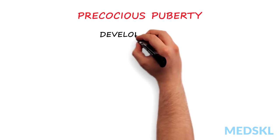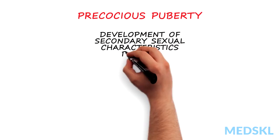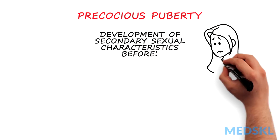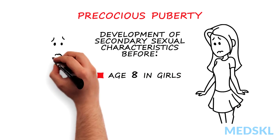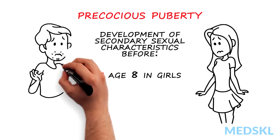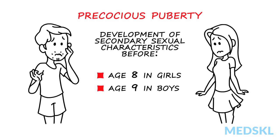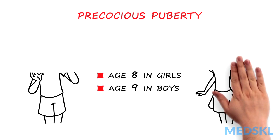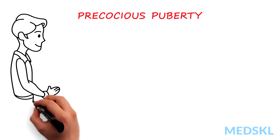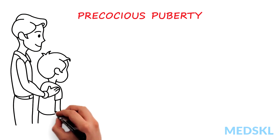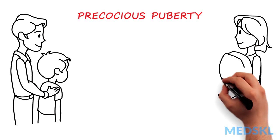Precocious puberty is defined as the development of secondary sexual characteristics before age 8 years in girls and before age 9 years in boys. Precocious puberty can be further divided into central and peripheral etiologies.